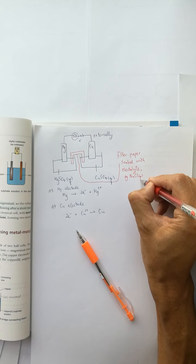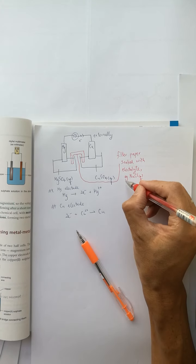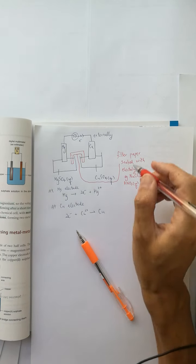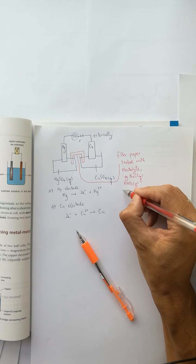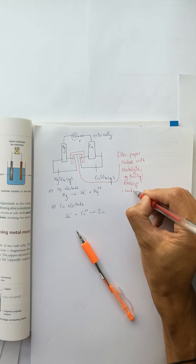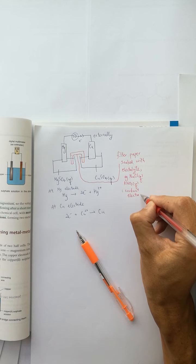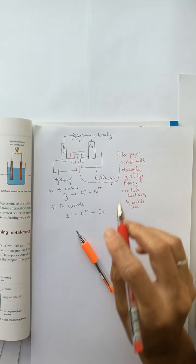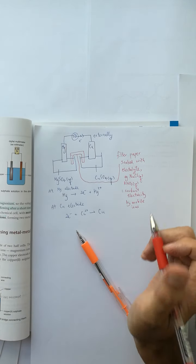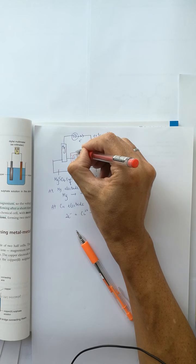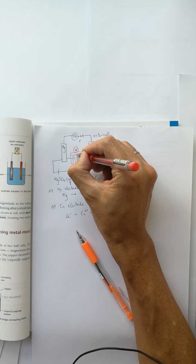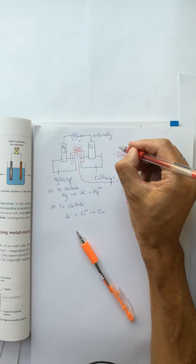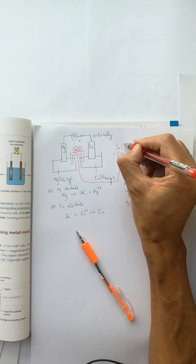The electrolyte used can be sodium chloride, sodium nitrate, potassium nitrate, or ammonium chloride. These function to conduct electricity — not by electrons, but by mobile ions. For example, we have sodium ions and chloride ions in the filter paper. This filter paper soaked with electrolyte is called a salt bridge.